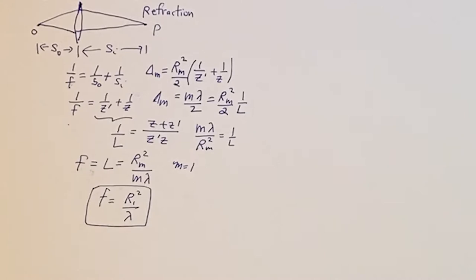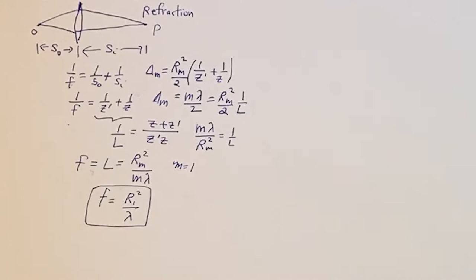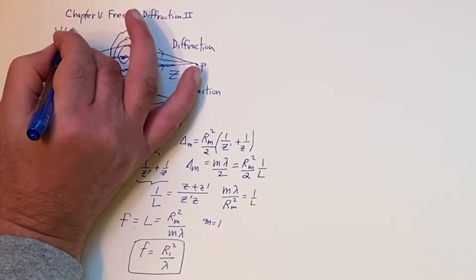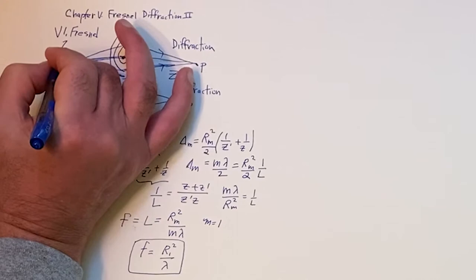That's a cool formula. It shows serious dispersion — the focal length depends very heavily on wavelength. Let's call this section V1: the Fresnel Zone Plate.